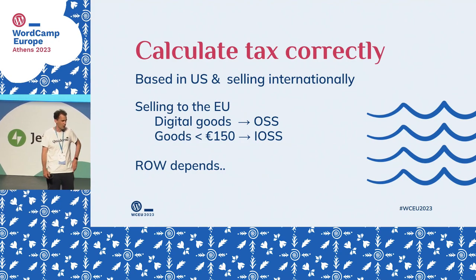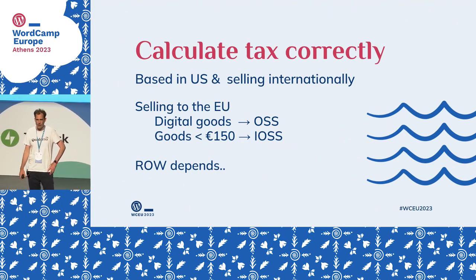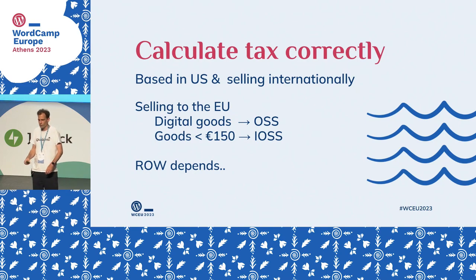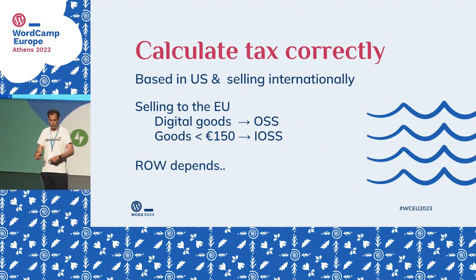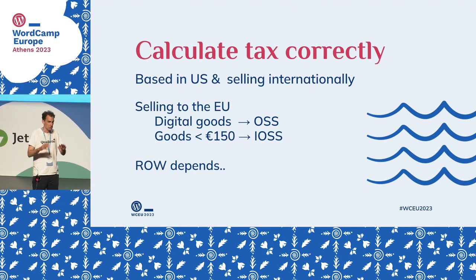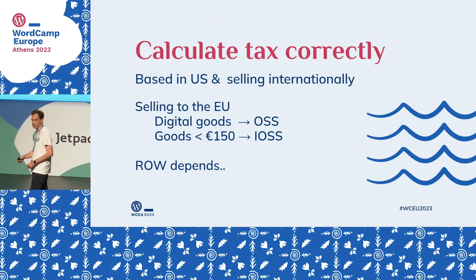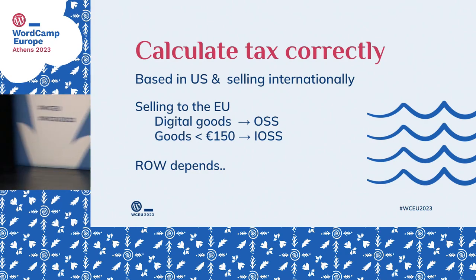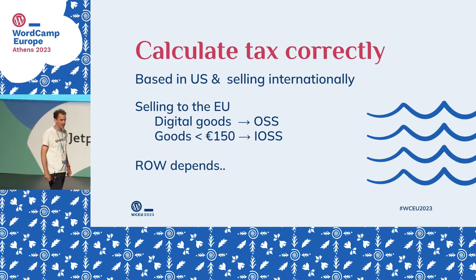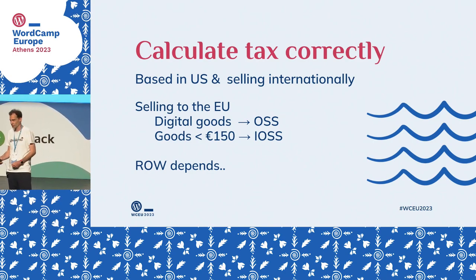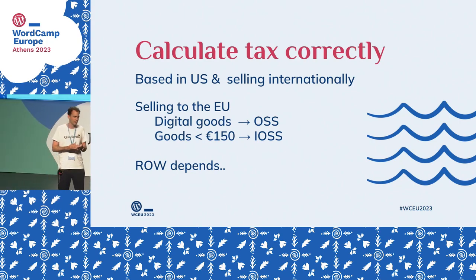If you're based in the US and sell digital products to the EU, you can register for the OSS — the One-Stop Shop system — with a €10,000 threshold. From that point, you register for the One-Stop Shop, probably in Ireland — I always recommend Ireland because everything is in English and it's digital, though you can register in any EU country. Once registered, you calculate the tax rate of your buyer's country: Greek rate for Greece, Dutch rate for the Netherlands, and so on.